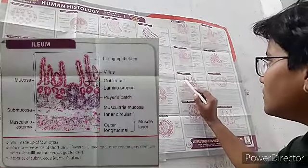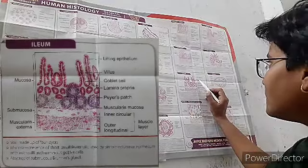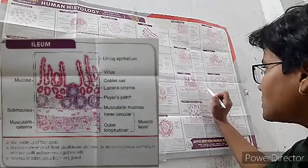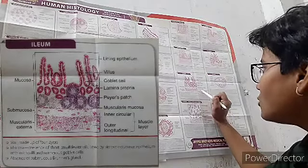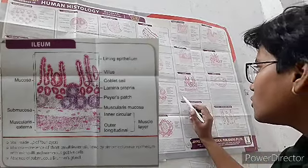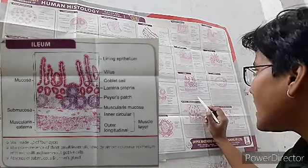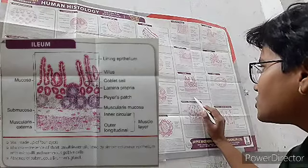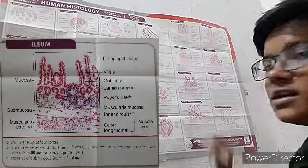Now the ileum. Visible structures include mucosa, submucosa, muscularis externa, villus, lining epithelium, goblet cells, lamina propria, Peyer's patches, muscularis mucosae, and inner circular and outer longitudinal muscle layers. The wall is made up of four layers. The mucosa has short, small, fewer villi lined by simple columnar epithelium with microvilli and numerous goblet cells. Brunner's glands are absent in the ileum.